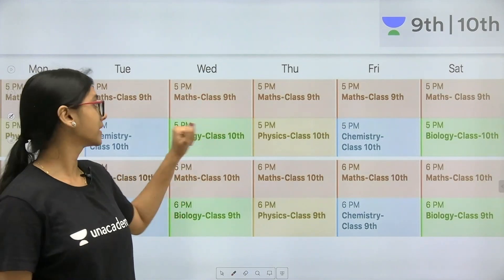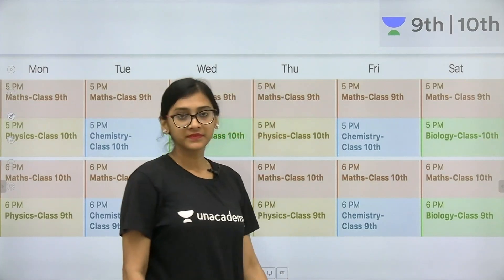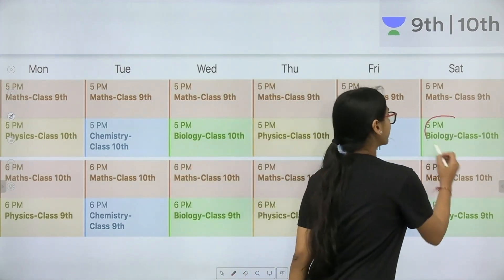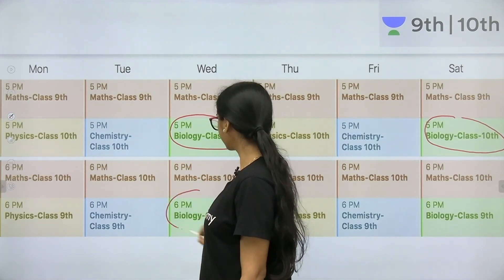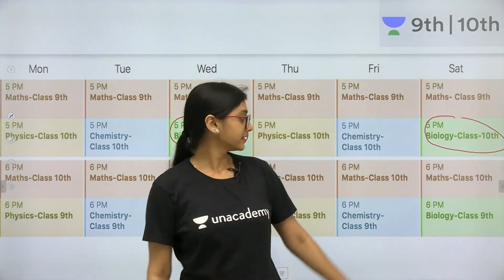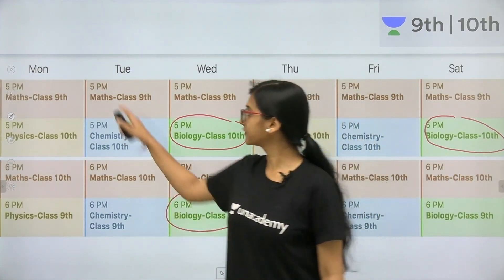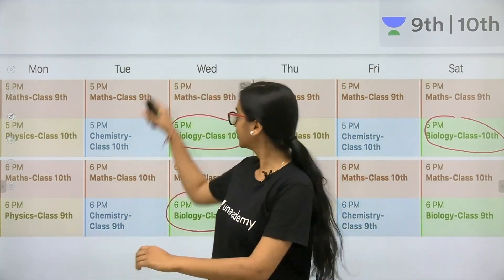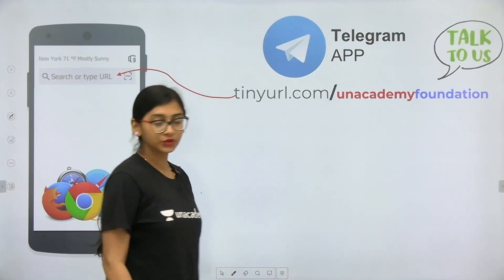Before going to the class, note down the timetable. Every day, a Mathematics video will be premiered: for 10th standard at 6 PM, and for 9th standard at 5 PM. Biology videos will be premiered on Saturday and Wednesday. For 10th standard the biology video is at 5 PM and for 9th standard at 6 PM. Physics is on Monday and Thursday; Chemistry is on Friday and Tuesday.